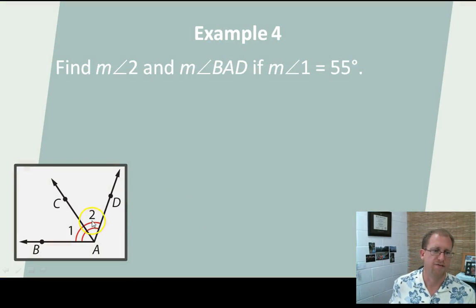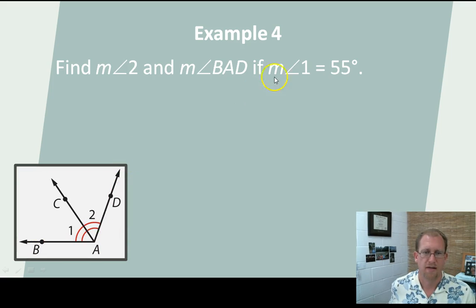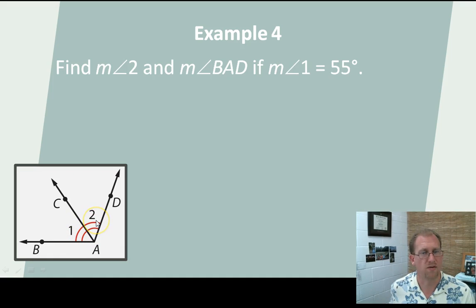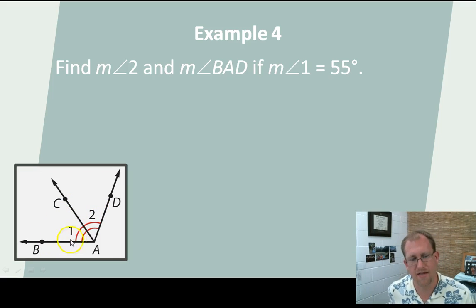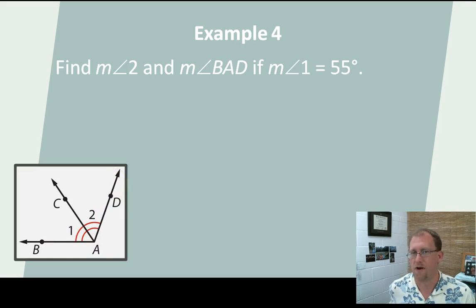Let's find the measure of angle 2 and the measure of angle BAD. If angle 1 equals 55 degrees, the hash marks across the angles tell us these two angles are congruent — the same measure. So if this is 55 degrees and this is congruent, then that is also 55 degrees. Then 55 plus 55 means angle BAD is 110 degrees.